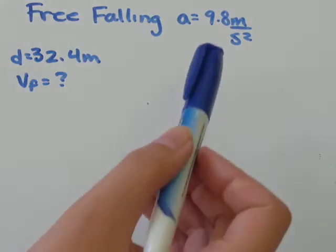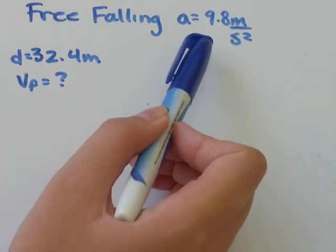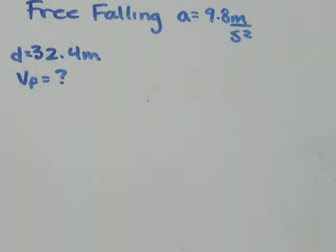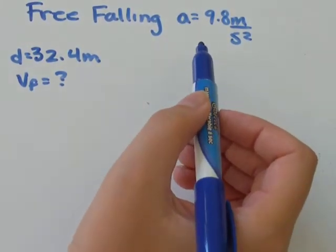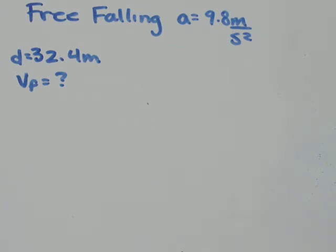And the acceleration due to gravity here on Earth is 9.8 meters per second squared. So even though these questions won't state that that's what acceleration is equal to in the question, if it says something like a stone is dropped or something falls off a cliff, you know that the force acting upon it as acceleration is always going to be gravity.